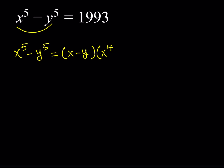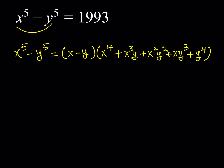The second term is x cubed times y, introducing y. One thing to remember is that the sum of the powers should always add to four — it's like the binomial theorem without the binomial coefficients. The next term reduces x and increases y: x squared y squared. From symmetry, things are then reversed: x y cubed, and finally y to the fourth. If you distribute this out, you can verify that x to the fifth minus y to the fifth factors this way.